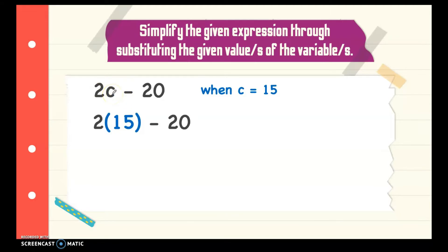If there is no operation between them, then multiplication is implied. If we have 2c, that means c is multiplied by 2. And, if c is 15, we multiply 15 times 2.